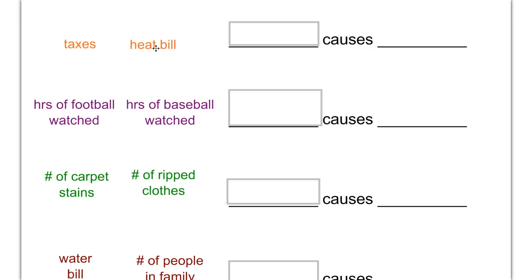Here we have taxes and heat bill. The amount you spend in taxes and the amount you pay on your heat bill each month. What might link these two variables? I would suggest that it would be the size of your home. Both of these would be response variables to the size of your home. If you have a larger home, you're probably going to pay more in taxes. And if you have a larger home, you're probably going to have a larger heat bill.